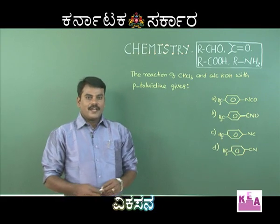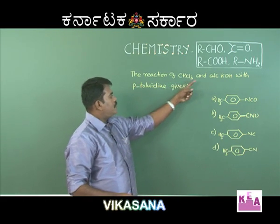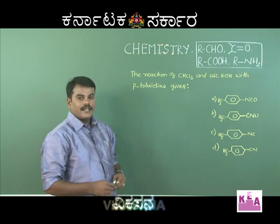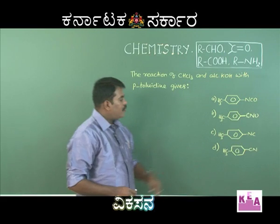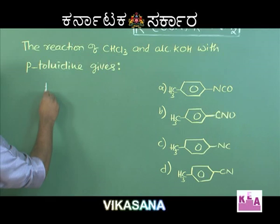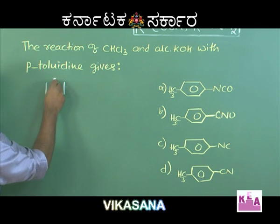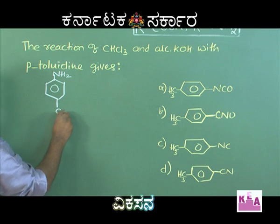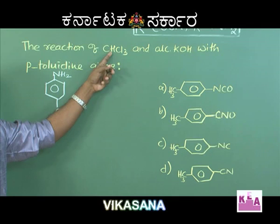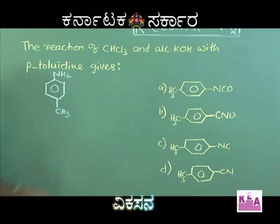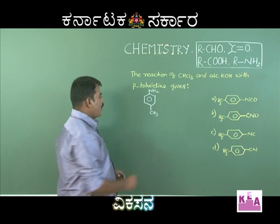The next question: the reaction of chloroform and alcoholic KOH with paratolidine gives what product? Paratolidine is paramethyl aniline. It is an aromatic primary amine, and upon treating with chloroform and alcoholic KOH, it must give an isocyanide or carbylamine.